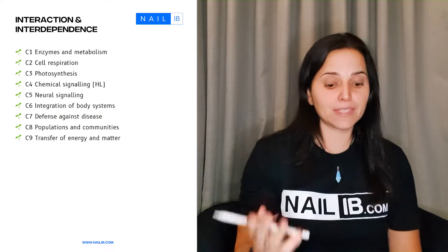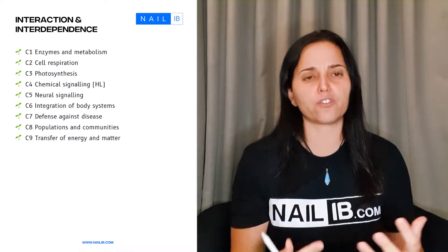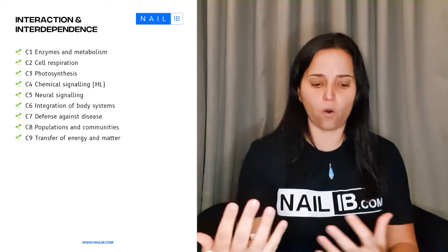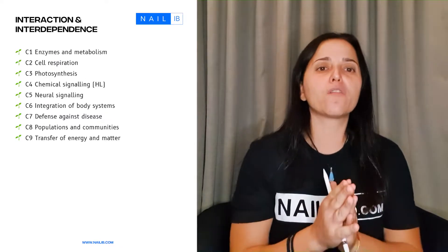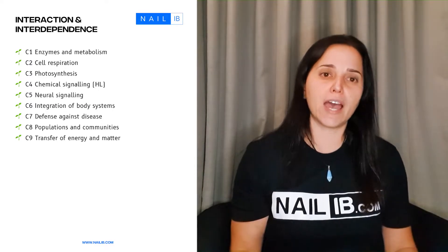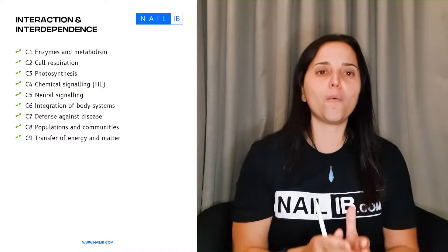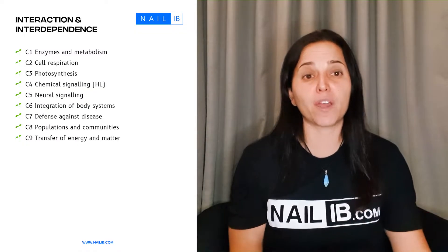Theme C is interactions and interdependence. It's all about how things are interacting with each other—organisms interacting, or organs interacting with each other, or pathogens against human bodies. From C1 to C9, these topics are basically related to metabolisms and how things are interacting with each other.